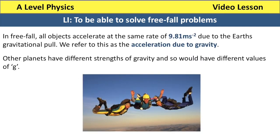In free fall, all objects accelerate at the same rate, and on Earth that is 9.81 metres per second squared because that is the value of Earth's gravitational field. On the Moon they would all accelerate at the same constant rate but it would be much lower because of the Moon's gravitational field being weaker. We refer to this as the acceleration due to gravity. The vast majority of situations we deal with will be on Earth, so we will be saying that all things accelerate at 9.81 metres per second squared.